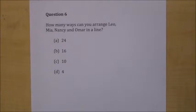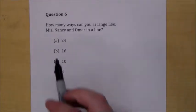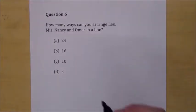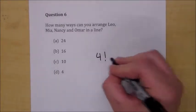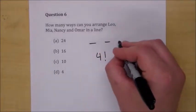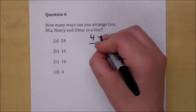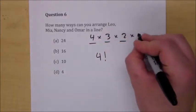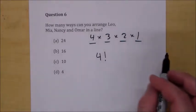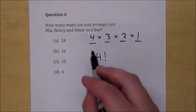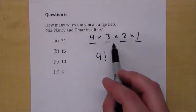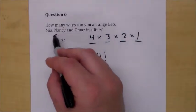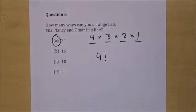Question six: how many ways can you arrange Leo, Mia, Nancy, and Omar — four people in a line? That's going to be four factorial. You have four choices for the first, three for the second, two for the third, and one for the last. Four factorial equals 4 × 3 × 2 × 1. Four times three is 12, times two is 24, times one is 24.